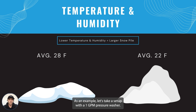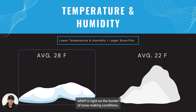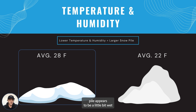As an example, let's take a setup with a one GPM pressure washer. Let's say we ran that system for about six hours and the average temperature was 28 degrees Fahrenheit, which is right on the border of snowmaking conditions. In the picture on the left, you'll see that the snow pile appears to be a little bit wet and is more condensed — it's more packable snow.